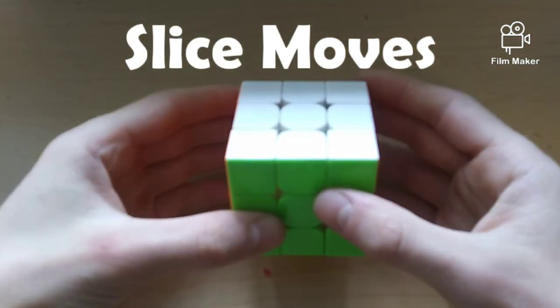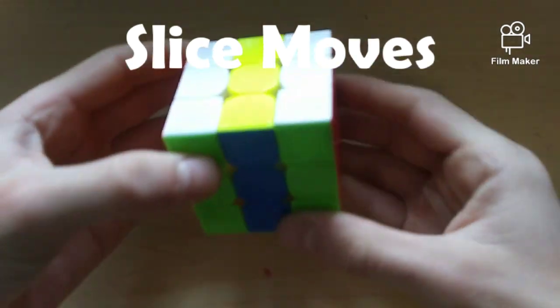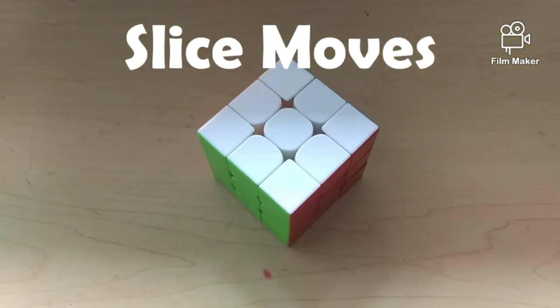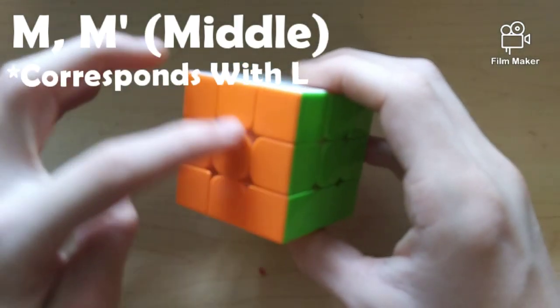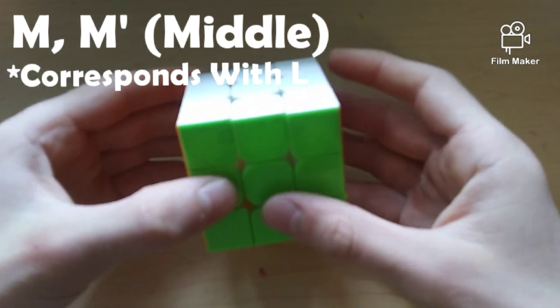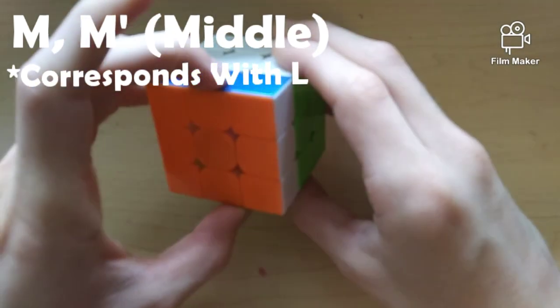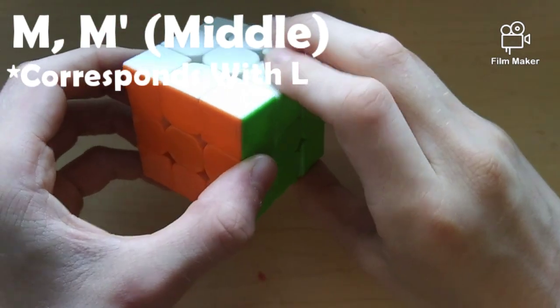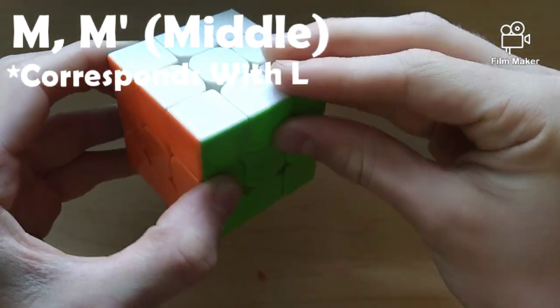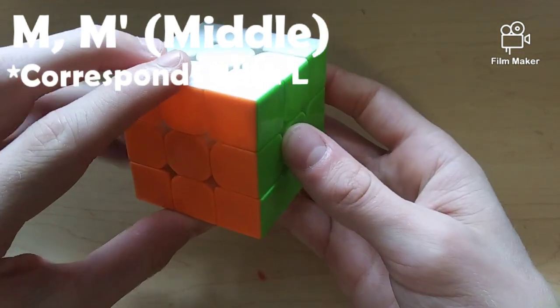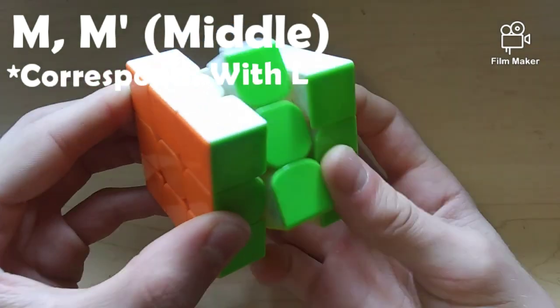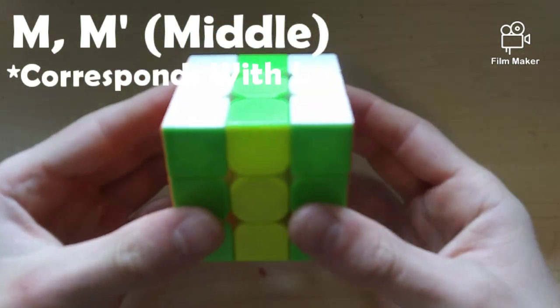Next up, I will go over the slice moves on the cube, which moves all of the middle layers. These slice moves are known as M, which means middle, E, which means equator, and S, which means standing. So, first I'm going to go over the M, or the middle layer, which is corresponding to the left side. This means that if you want to do an L, that's going to be M. If you want to do M', which is that way, you know that by looking at the left side. Since L' is that way, M' is also that way. And then, similarly, you have M2.